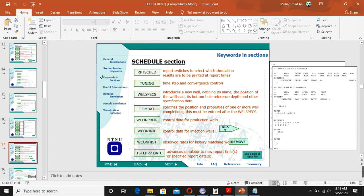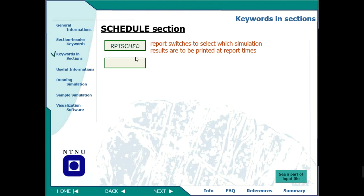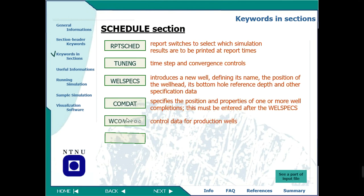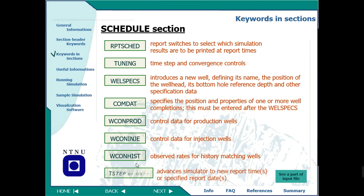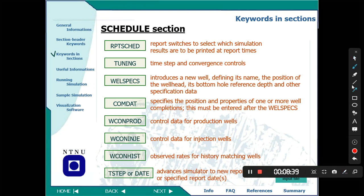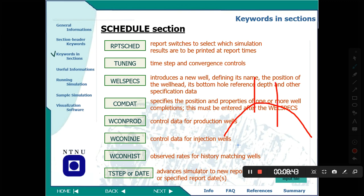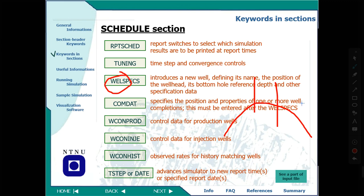The SCHEDULE section is very important — this is where you define all your wells and their operations. The key keywords include: WELSPECS (well specifications), COMPDAT (well completion data), WCONPROD (production control), WCONINJ (injection control), WCONHIST (history matching), and time steps or dates. WELSPECS and COMPDAT are closely connected and define the well properties and completion intervals.